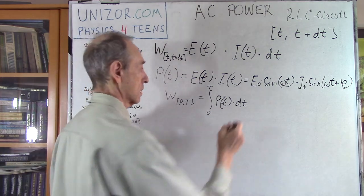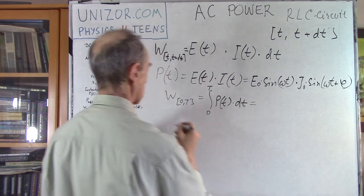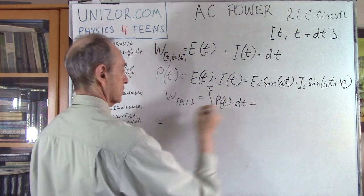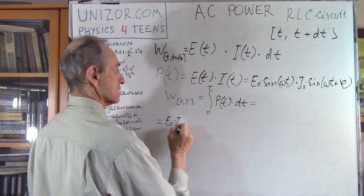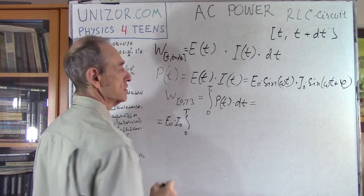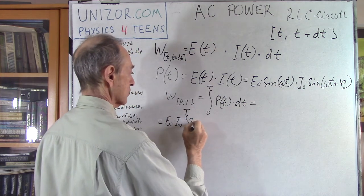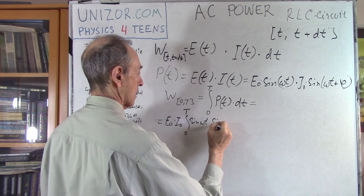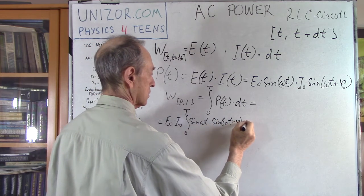So, the amount of work performed by electricity during time from 0 to T is the integral of P(T) dT. We know what P(T) is, so we take E0 and I0 outside, and we have the integral from 0 to T of the multiplication of two sines dt.